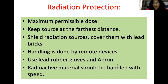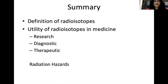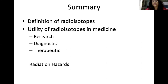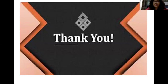In summary, radioisotopes are compounds that emit radiation and undergo transmutation. We have seen their utility in medicine — in research, diagnostic purpose, and therapeutic purpose. We discussed radiation hazards, which are somatic — both immediate and delayed — or genetic. We also covered how to decrease radiation health hazards. These are the references for this lecture. Thank you for your patient listening — please like, share, and subscribe the channel for more such videos.